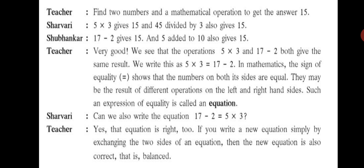Sharvari asks, can we also write the equation 17 - 2 = 5 × 3? Yes, that equation is right too. If you write a new equation simply by exchanging the two sides of an equation, then the new equation is also correct, that is balanced.